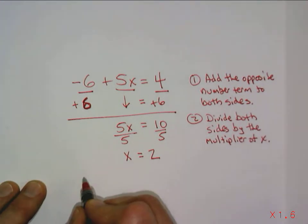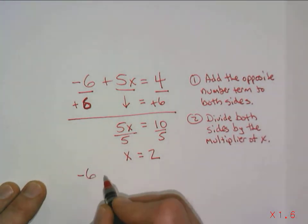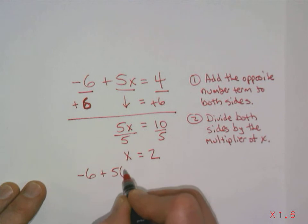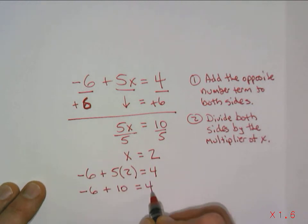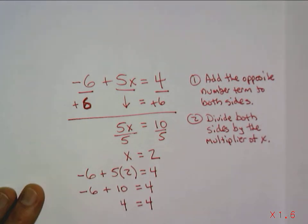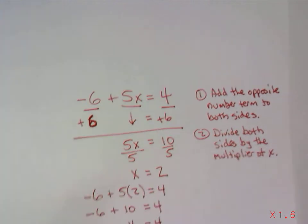Which we could check. Negative 6 plus 5 times 2 equals 4. So negative 6 plus 10 equals 4. So if you take a negative 6 and a positive 10, you get 4 equals 4. So our solution for x is true. So let's do one more quick example just to make sure we have this down now.